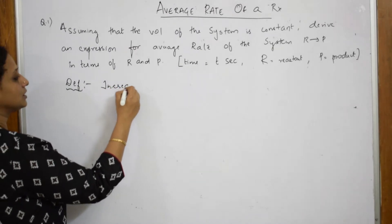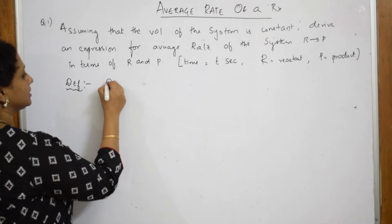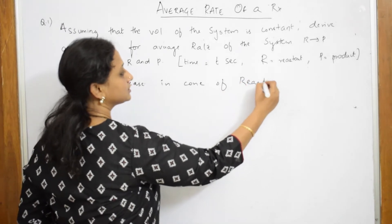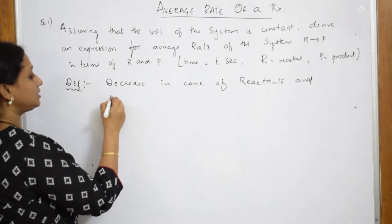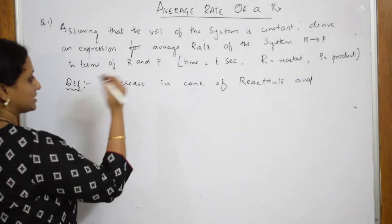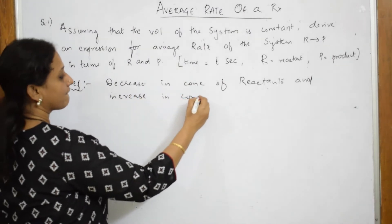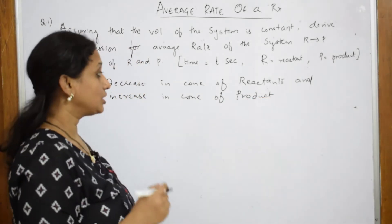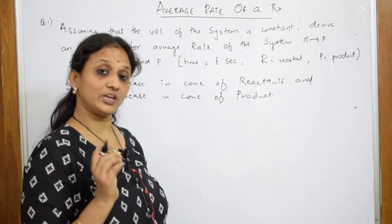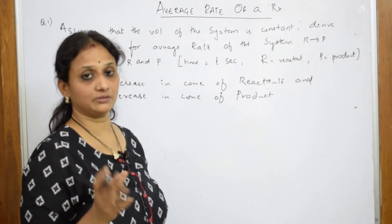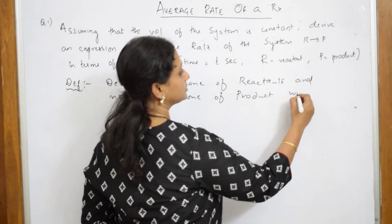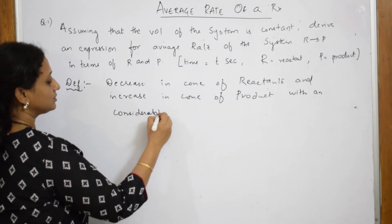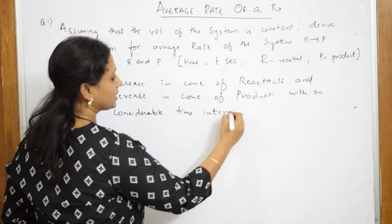How should I define average rate of reaction? It involves decrease in concentration of reactants and increase in concentration of products — it is the same definition as rate of the reaction. The difference is that for average rate you have to mention a considerable time interval; you are going to consider a time factor and compare that time interval.